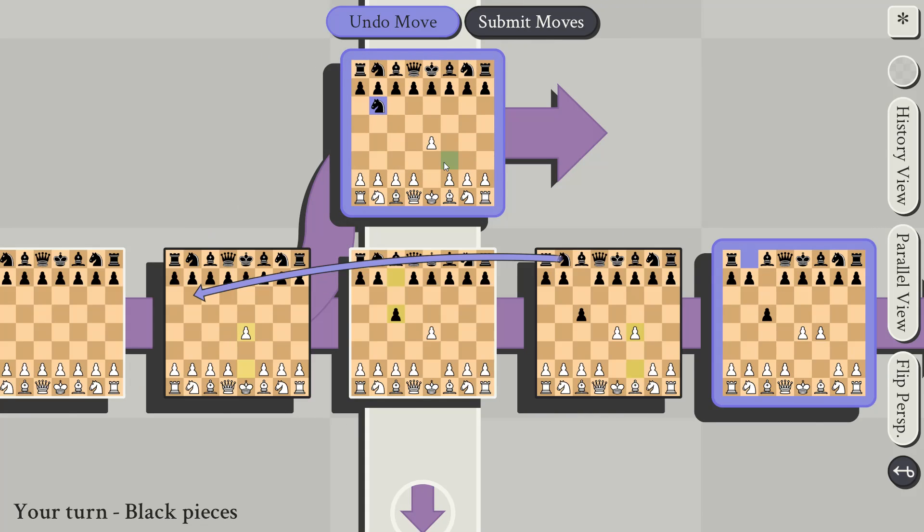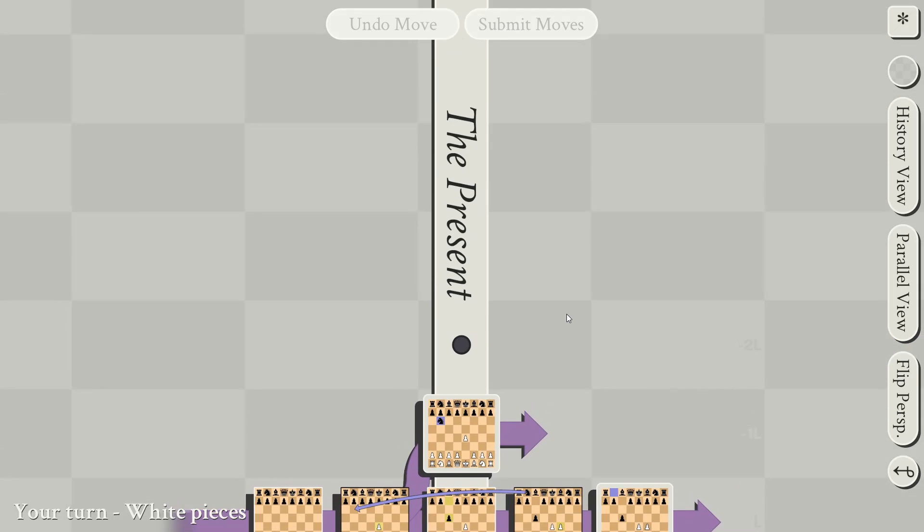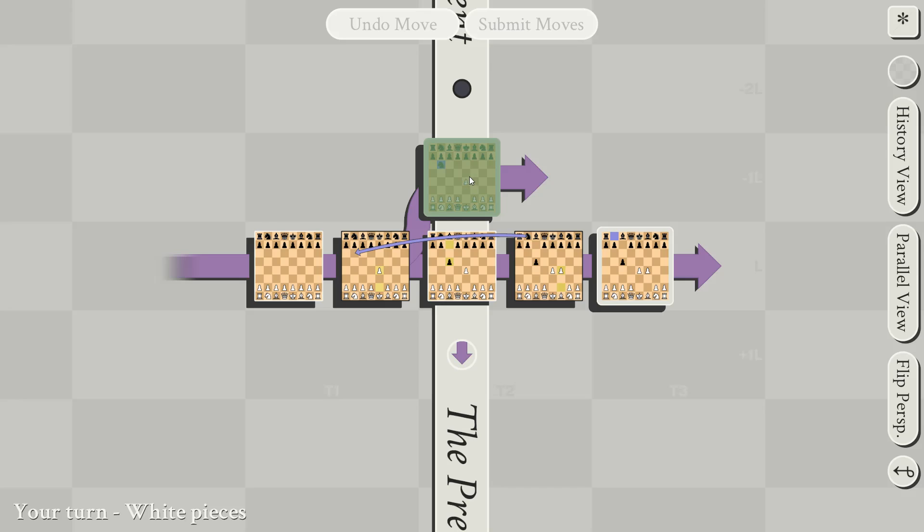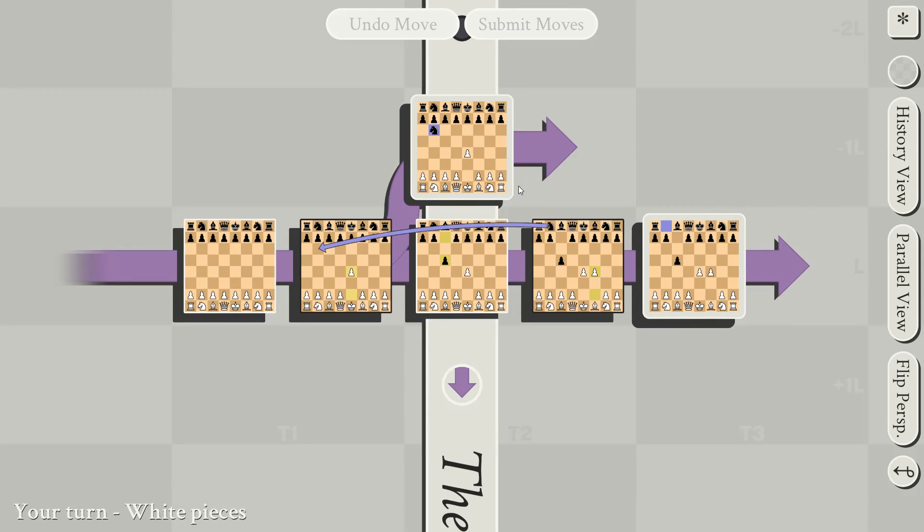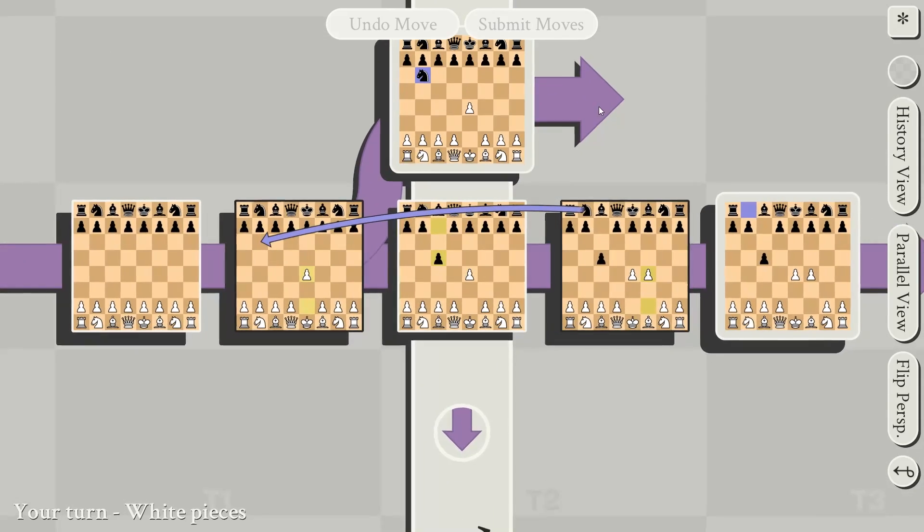Now we can see that the present has moved back to this board. We must move on all boards that are in the present, and we have the option of moving on boards in the future. So we can see this thick white outline, and that means that white must move on this board.